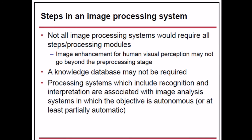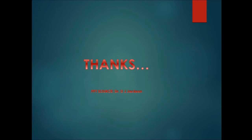Not all image processing systems require all steps and processing modules. For example, image enhancement for human visual perception may not go beyond the pre-processing stage, meaning a knowledge database may not be required. Processing systems that include recognition and interpretation are associated with image analysis systems where the objective is autonomous or at least partially automated processing. This concludes the introduction to digital image processing.